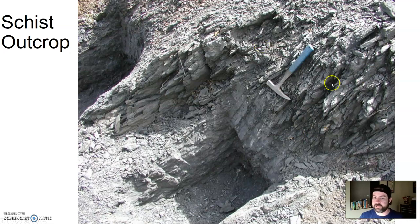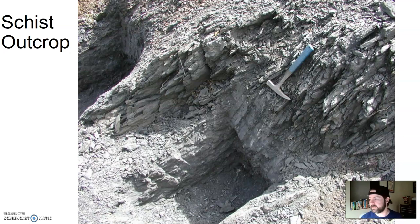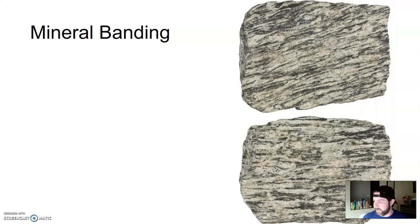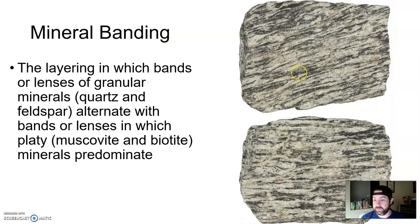A good type of metamorphic rock that has schistosity would be schist. These textures are named after the rocks, or the rocks are named after the textures. Here's an outcrop of schist — you can kind of see the layered foliation. Oftentimes schist has a shiny, sparkly appearance because of the planar arrangement of minerals like muscovite and biotite, which are very shiny minerals themselves. Then we get mineral banding, a layering look in which bands of granular minerals — quartz and feldspar are the lighter colors — alternates with bands of platy muscovite and biotite minerals.